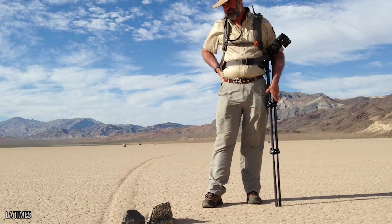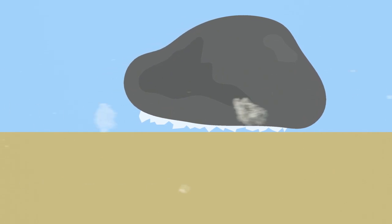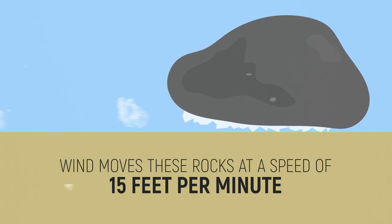Brothers and fellow scientists Richard and James Norris discovered that ice, frozen to the surface following a rare night of rainfall, would eventually break up, cling to the bottom of the rocks, catch wind and act as sails, pushing the rocks along the desert floor at an average of 15 feet per minute.